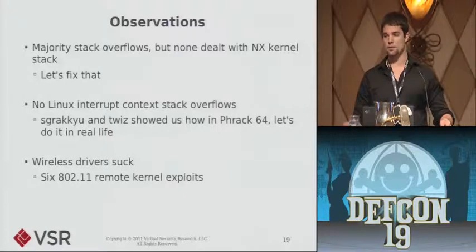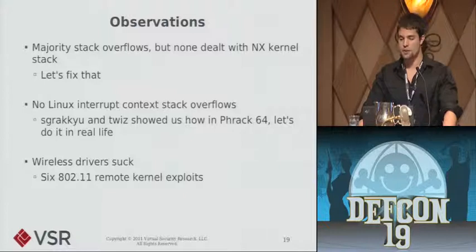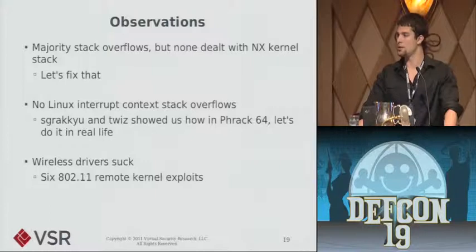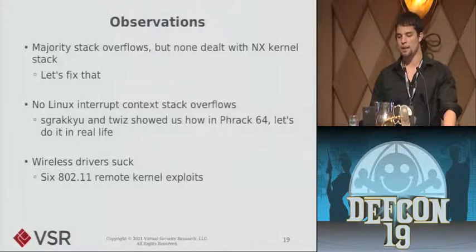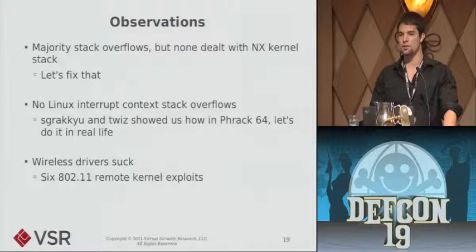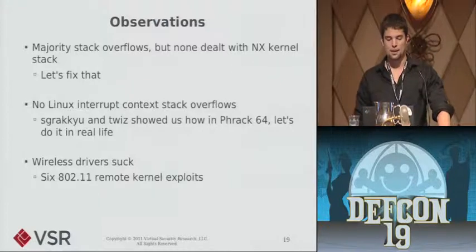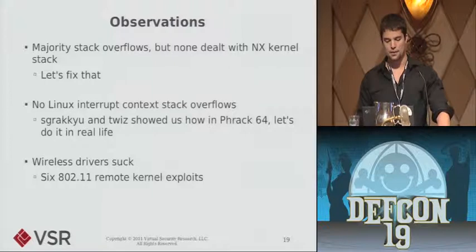One of the great contributions from the SCTP exploit is Sgrakkyu introduced a neat trick that leverages a 64-bit specific page mapping to easily transition from interrupt context to executing code directly in user-land. Drawing some trends: three-quarters of these issues were stack overflows, but none of them had to contend with non-executable stacks in the kernel itself because that feature wasn't introduced at that point — my exploit will try to address that. Neither of the two Linux issues were stack overflows in interrupt context, which is a particularly difficult context because you need to do a bunch of cleanup. Sgrakkyu and Twiz published an article in Phrack called 'Notes on Kernel Exploitation' describing the steps needed, but it was for a vulnerability introduced for demonstration purposes — I wanted to provide a real-life example. Also, six of the 18 exploits were for issues in 802.11 code, so wireless drivers could probably use some improvement.